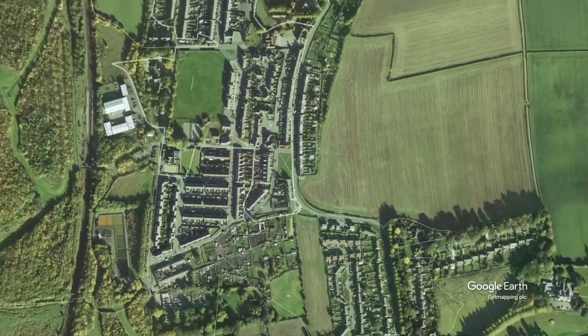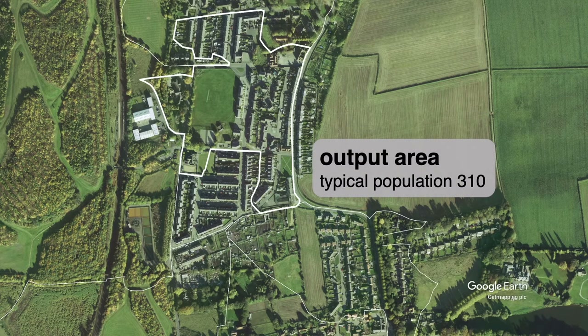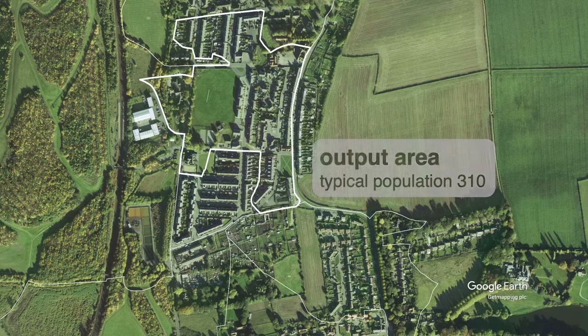And so many countries have a parallel set of areas that are defined specifically for producing local statistics. In England, the smallest areas for which any statistics are produced are called output areas. Output areas are really small — much smaller than wards, the smallest administrative unit — so they're the most granular area that we can look at using statistical data. Other countries tend to have equivalents to this; in the US, the equivalent is a census block, for example.